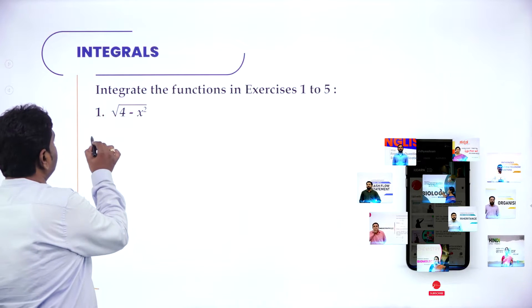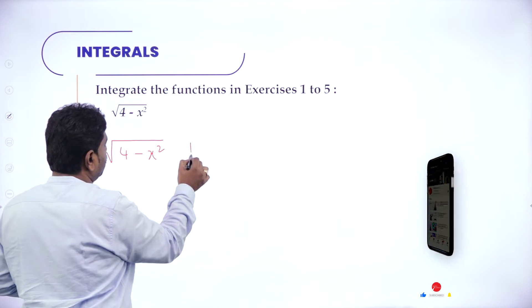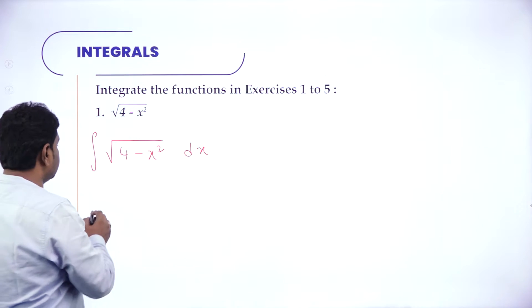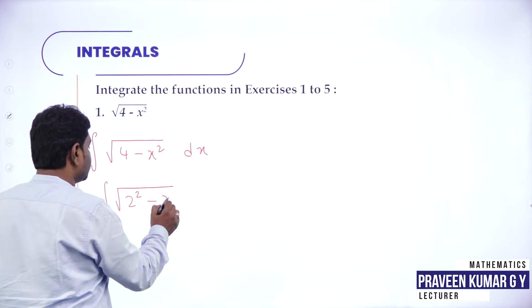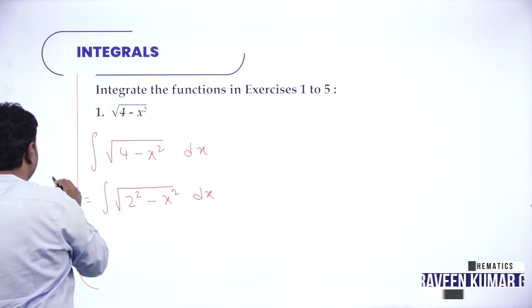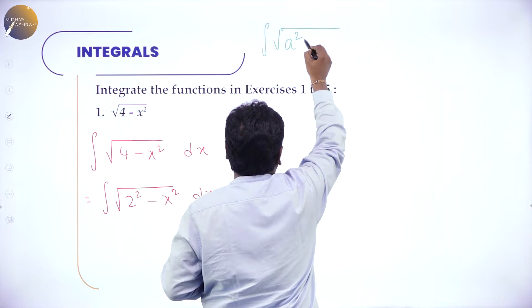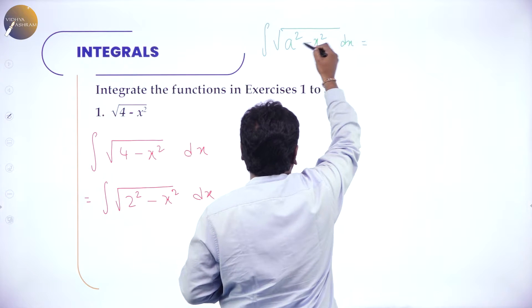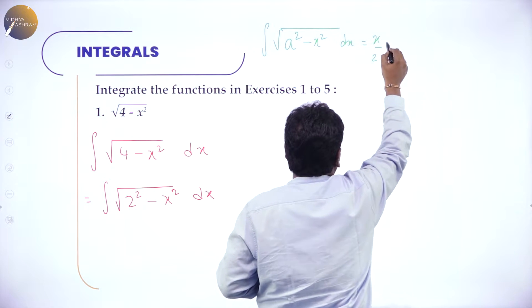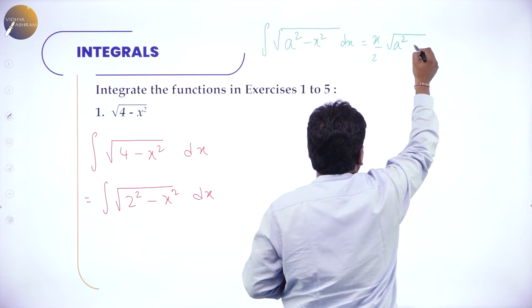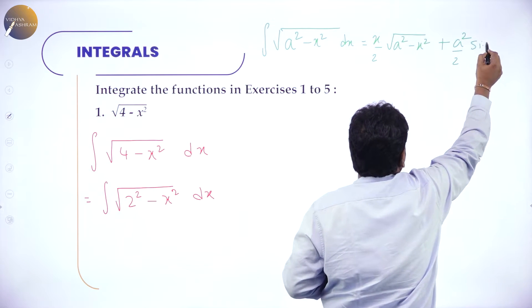Now they want you to integrate √(4 - x²) with respect to x. I can write this in the form ∫√(2² - x²) dx, so that it will be in the form ∫√(a² - x²) dx. The formula is x/2 · √(a² - x²) + a²/2 · sin⁻¹(x/a).